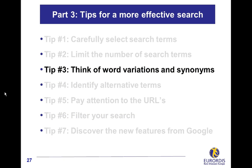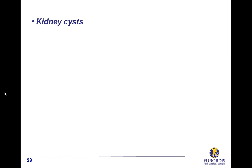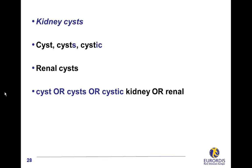Think of word variations and synonyms. Example: a search on kidney cysts. Search terms may have multiple endings, like cyst, cysts, cystic. Google is currently not very effective in managing these word variations. For more complete results, also think of synonyms like 'renal cysts', a synonym for kidney cysts. Such a query will provide you with documents containing at least one of the two terms — kidney or renal — covering documents with kidney cyst, kidney cysts, renal cyst, or cystic kidney.